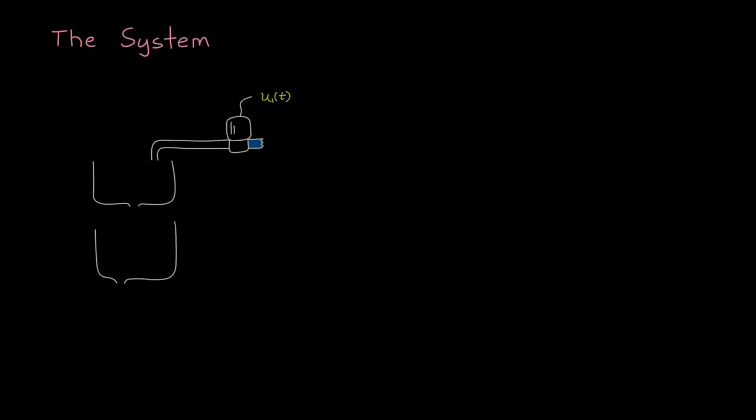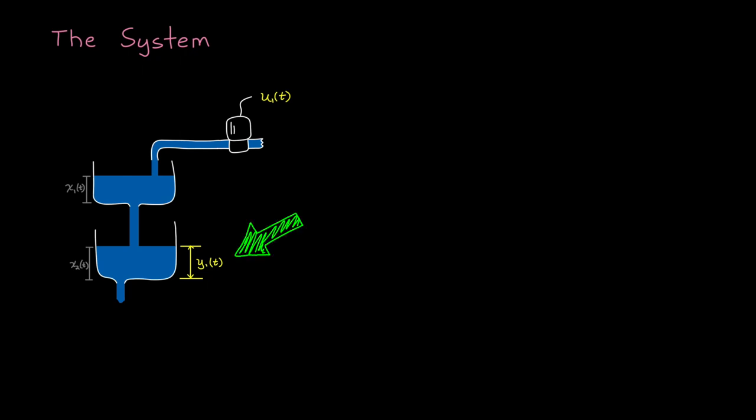To begin, let's briefly describe the system we're going to try to fit a model to. This is a two-tank system. The input into the system, u1, is the voltage applied to a pump which adjusts the flow of water into the upper tank. There's a hole in the upper tank which water flows through into the lower tank, which itself has a hole that drains the water out. The output is the height of the water in the lower tank, y1.